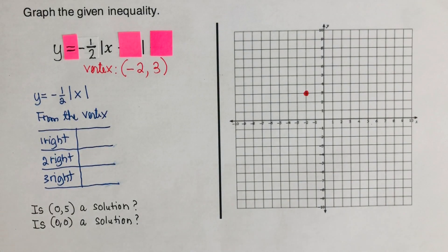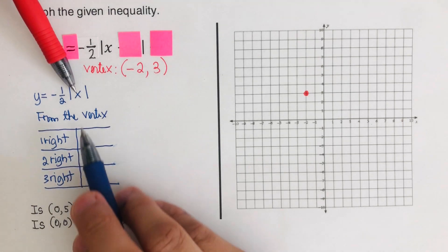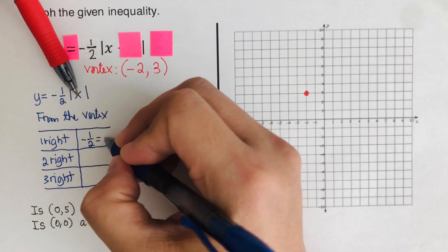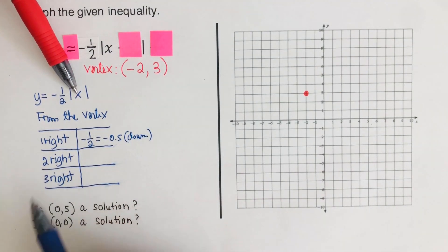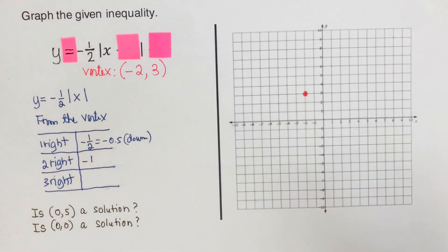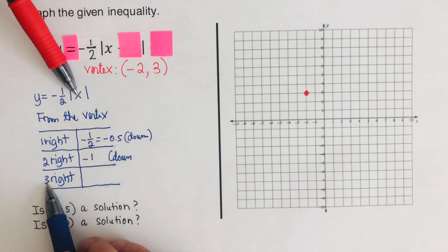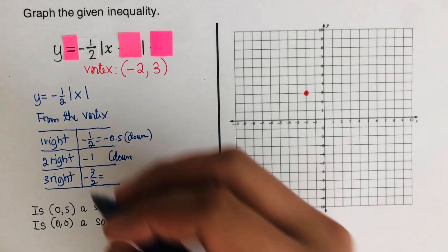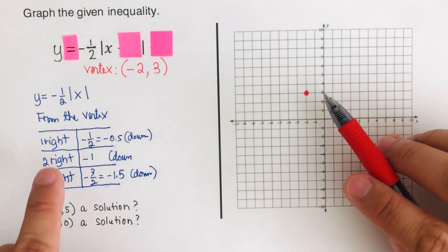We complete the table by plugging in one, two, and three. For x equals one: absolute value of one is one, times negative one-half equals negative one-half (or negative 0.5) — negative, so we go down. For x equals two: absolute value of two is two, times negative one-half equals negative one — negative, so we go down. For x equals three: absolute value of three is three, times negative one-half equals negative 1.5 — negative, so we go down.